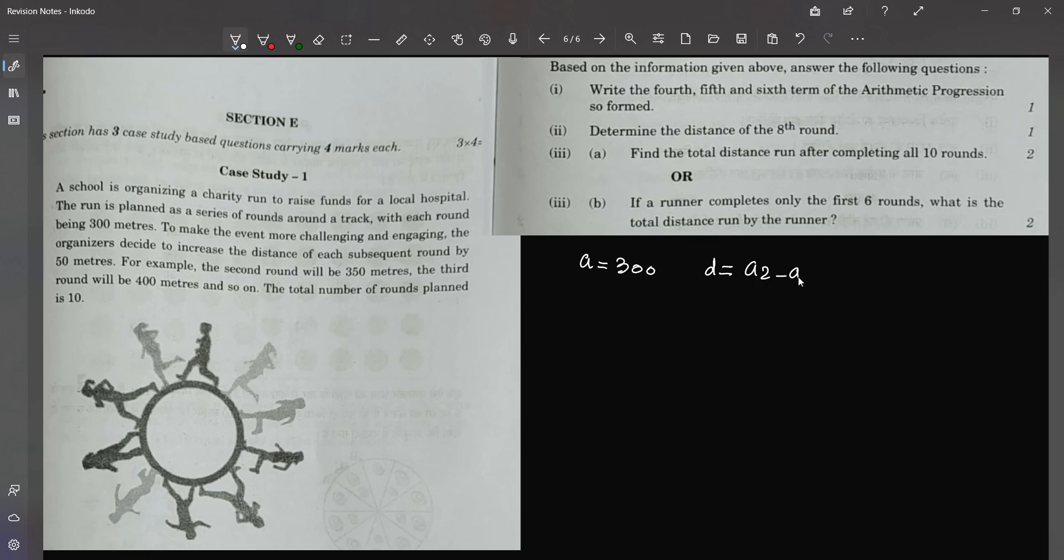The second term is given as 350 as we can see. It is already given that it is increased by 50 steps. So 350 minus, sorry, 350 minus 300 which is 50.